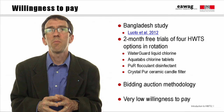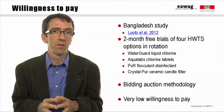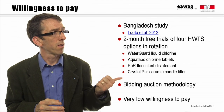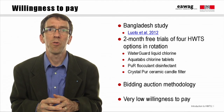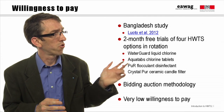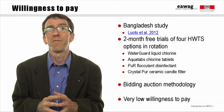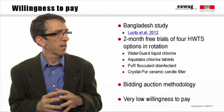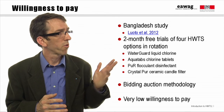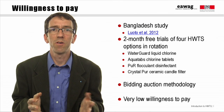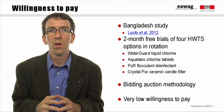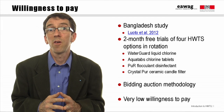After the trial, people participated in a bidding auction where they could express the maximum amount they would pay for: a bottle of Aqua Water Guard liquid chlorine, good for about two weeks of use; a strip of Aqua Tabs chlorine tablets, good for ten days; five sachets of PUR, enough for five days; or one Crystal PUR ceramic candle filter, similar to the tulip filter seen in week two, with an expected lifetime of a year or more.